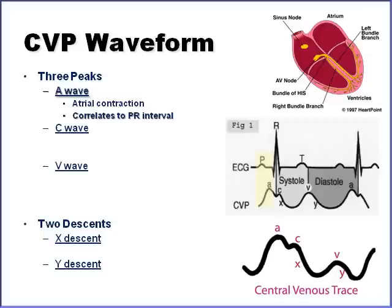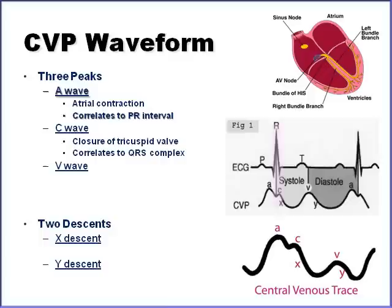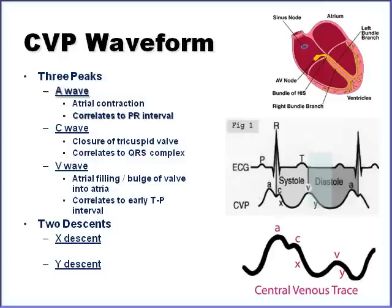When the SA node fires, you see the P wave, and that makes the atria contract — that's the electrical component. As that pressure wave travels through the transducing system to the monitor, there's a little bit of lag. Therefore, the A wave is just slightly after the P wave. The C wave represents closure of the tricuspid valve and correlates to the QRS complex. The V wave is atrial filling — bulging of the valve into the atria — and that correlates to the TP interval.